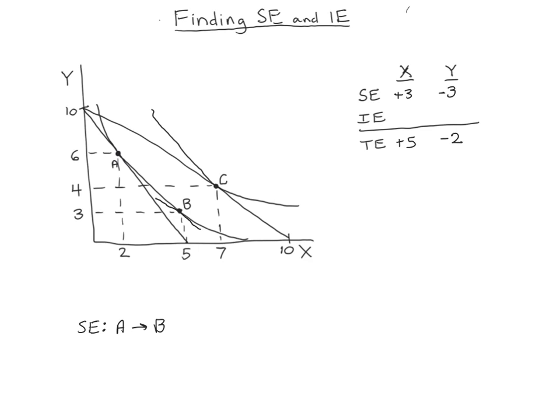If a price doesn't change, if the only thing that changes is income, then you wouldn't have a substitution effect. They'd both be zero, and you'd only have income effects. But whenever you see one positive, the other is going to be negative. They don't have to be exact opposites, like here, where one is plus three, one is minus three. That's just a coincidence.